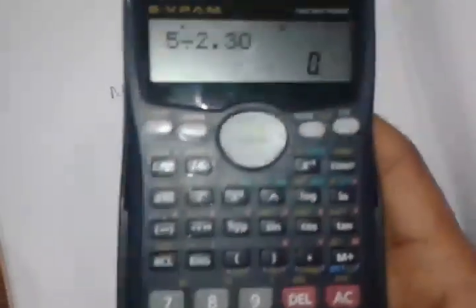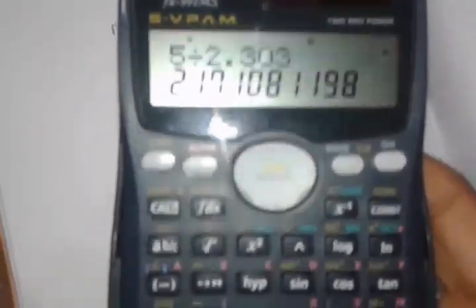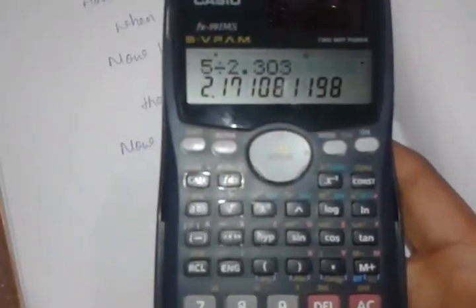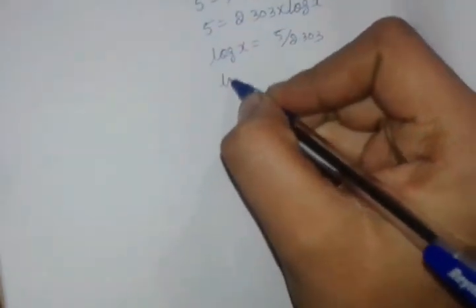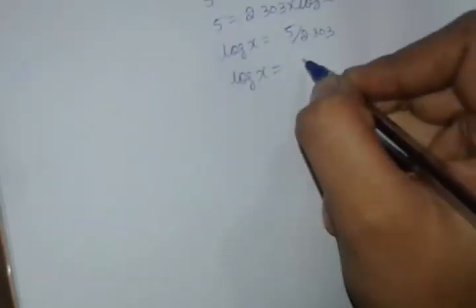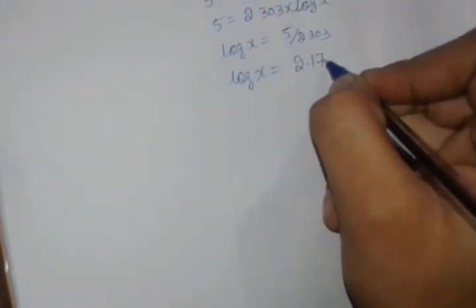So 5 divided by 2.303. Now what is the value? 2.171. Let us take the 2.171 value. So log x is equal to 2.171.